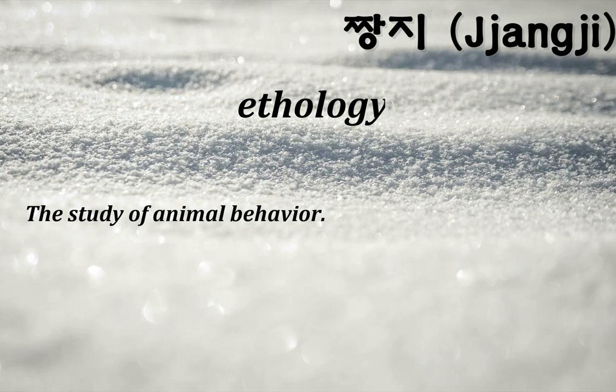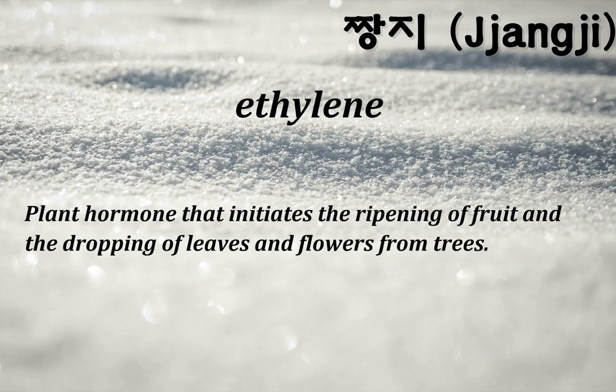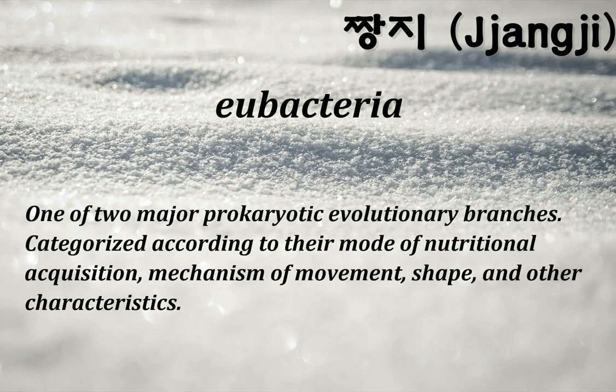Ethology: the study of animal behavior. Ethylene: a plant hormone that initiates the ripening of fruit and the dropping of leaves and flowers from trees. Eubacteria: one of two major prokaryotic evolutionary branches; categorized according to their mode of nutritional acquisition, mechanism of movement, shape, and other characteristics.